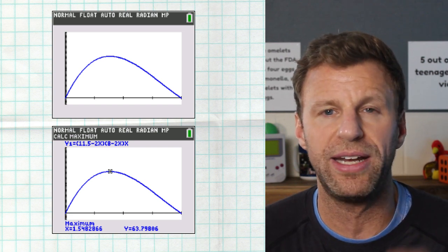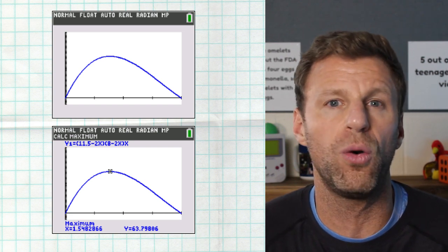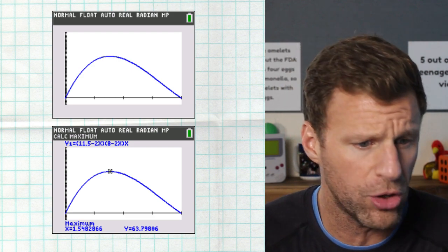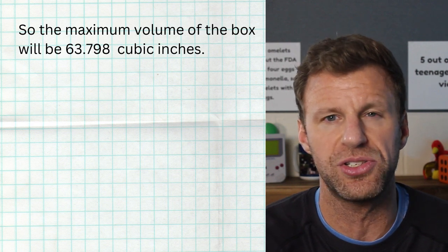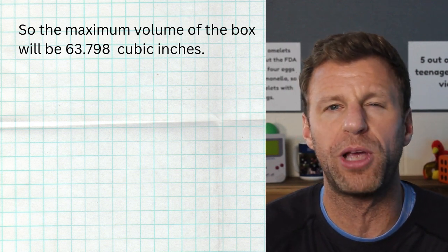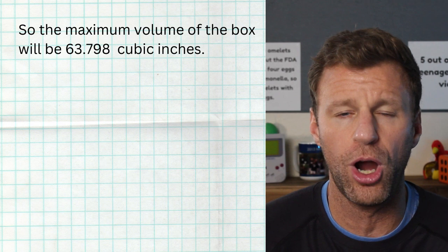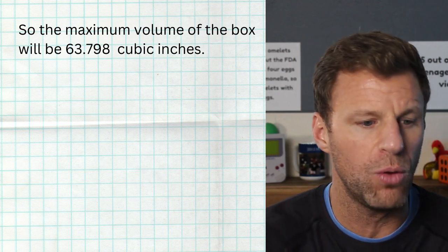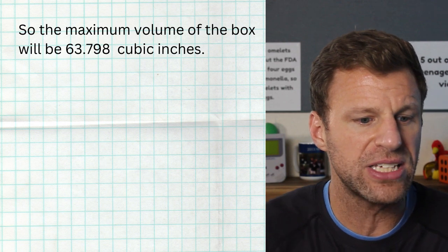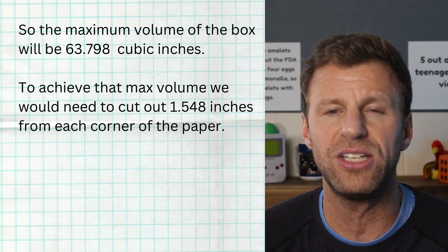And what we see at the bottom of our screen is an x and a y. Now remember, the y is the output, that's our volume. So the maximum volume is 63.798 cubic inches. That would be the maximum volume that we could possibly get out of this piece of cardboard. And what would it take to produce that maximum volume? Well, that's our x value, and that x value is 1.548 inches.